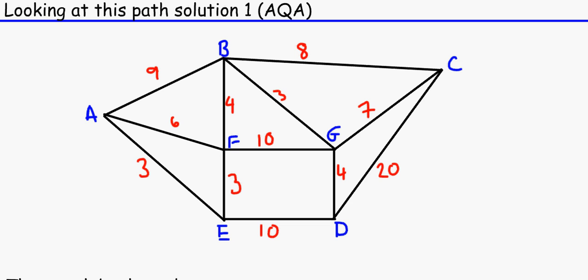And basically the question is how do you get from A to C? So here's A and here's C. So first of all, you start off with a temporary label and the start point is always zero, because to get from A to A is zero. And that is coincidentally always our permanent label.